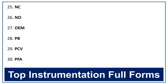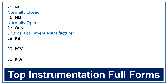NC. The full form of NC is normally closed. NO. The full form of NO is normally open. OEM. The full form of OEM is original equipment manufacturer. PB. The full form of PB is push button.